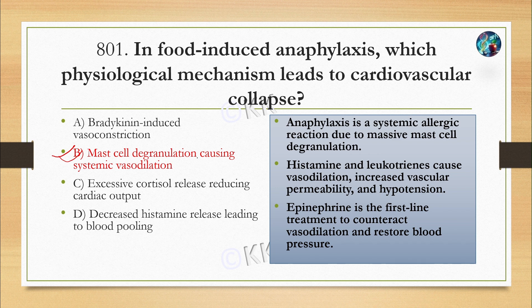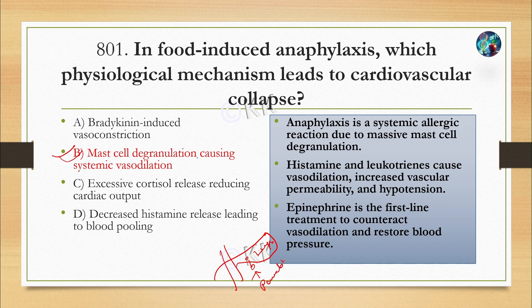Anaphylaxis or anaphylactic shock is basically a systemic allergic response due to mast cell degranulation. Histamine and related receptors in our body cause vasodilation, which increases vascular permeability and hypotension. For treatment, we also use corticosteroids in CVS crisis. Adrenaline, also known as epinephrine, is used as a first-line treatment to restore the falling blood pressure.